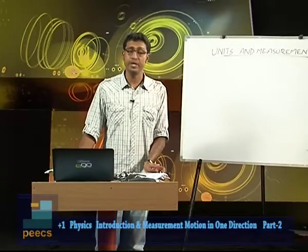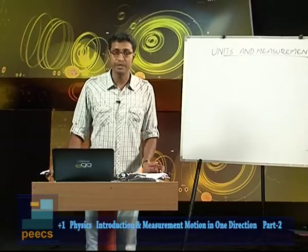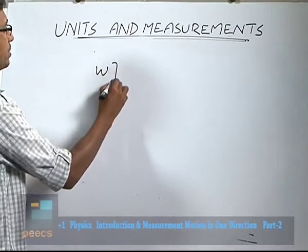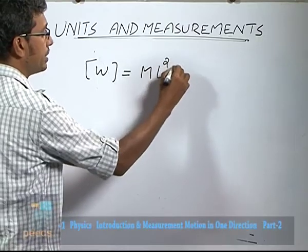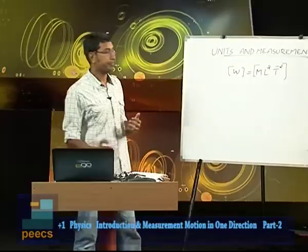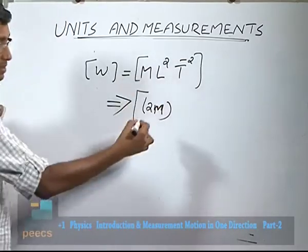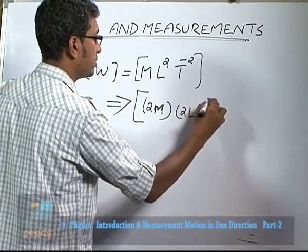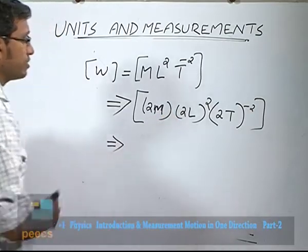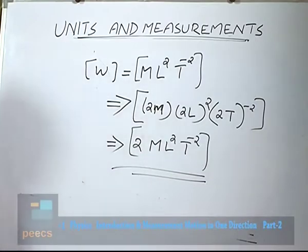Dimensional analysis can be used in many other situations. Question: if the units of length, mass, and time are each doubled, the unit of work done is increased by how much? Work done has the dimensional formula ML²T⁻². Doubling each unit gives 2M × (2L)² × (2T)⁻² = 2 × M × L² × T⁻². So the unit of work done doubles — answer is option E.